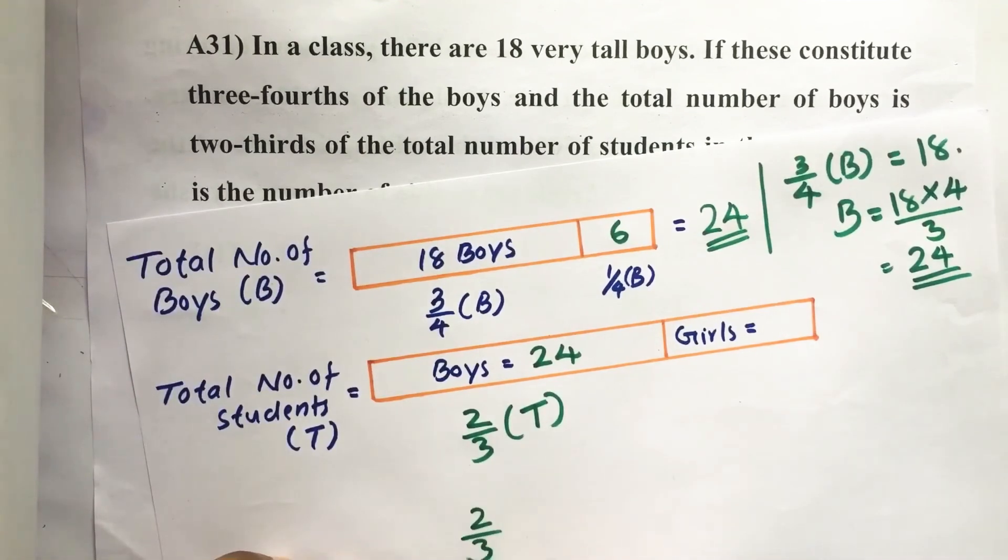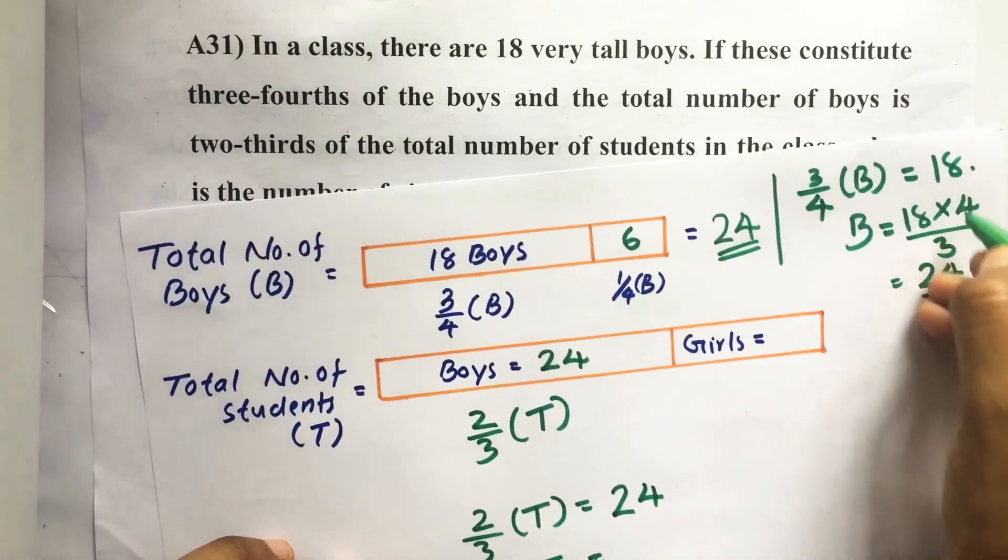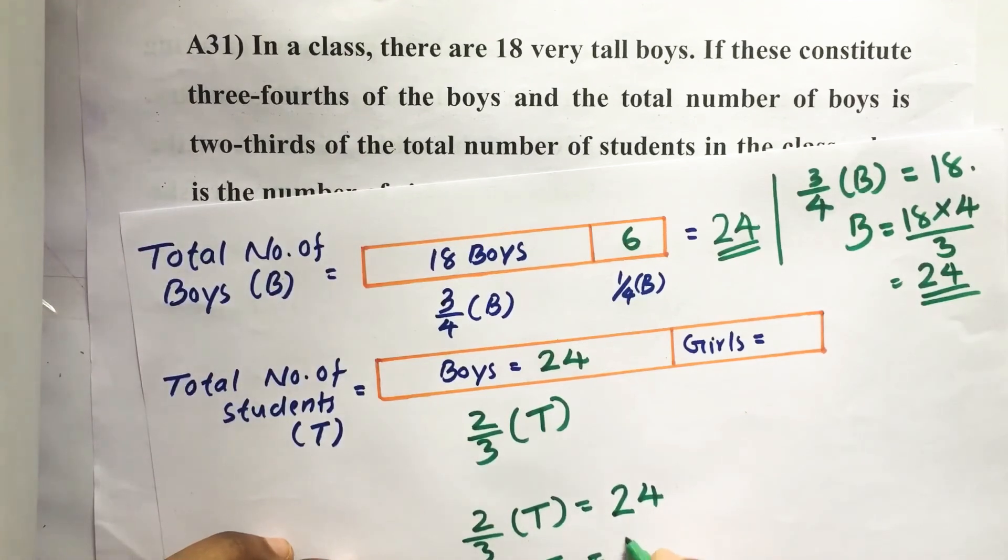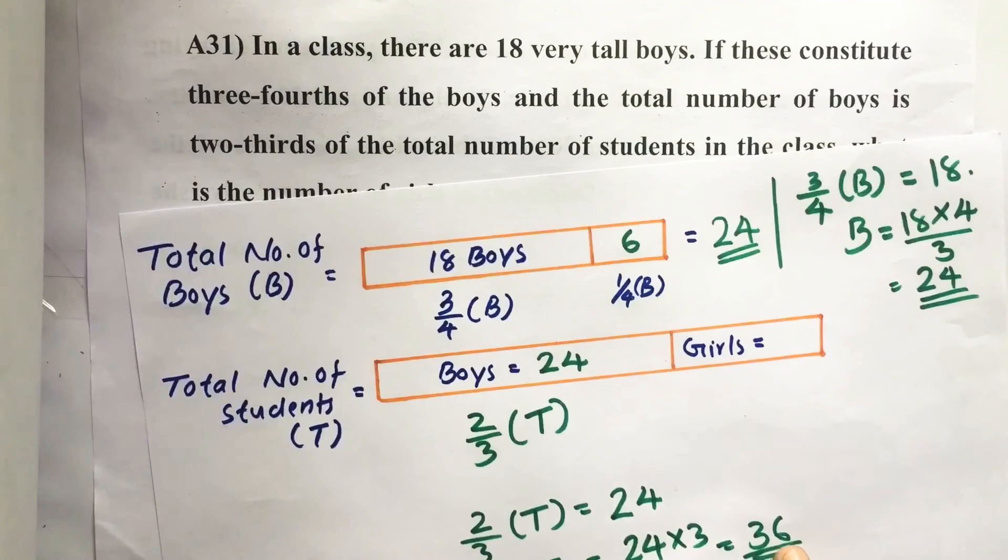Then two-thirds of T equal to 24. From here T equal to—the same way how we did here we can do here also—twenty-four into three I am taking this side, divided by two. Then two times 24 is 48, divided by 2... then three times 24 is 72, divided by 2 is 36. Total we get after simplifying this, 36.